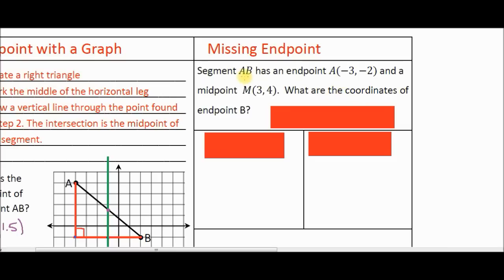Let's read the question. Segment AB has an endpoint at A(-3, -2) and a midpoint at M(3, 4). What are the coordinates of endpoint B? You can see this is different from our previous problems.